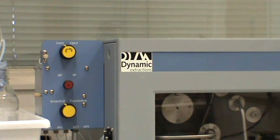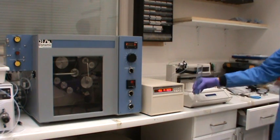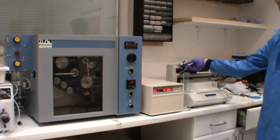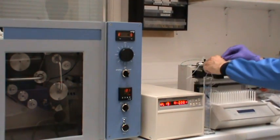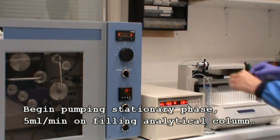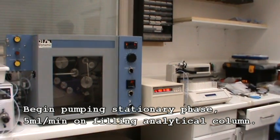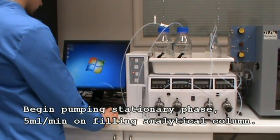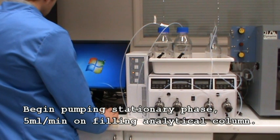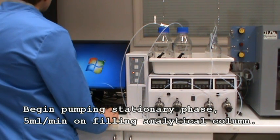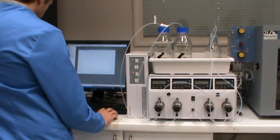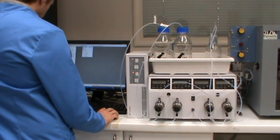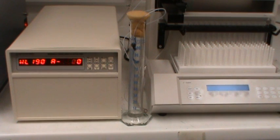Now we need to fill the column with stationary phase. Take the waste stream from the detector and place it in a measuring cylinder. Begin the program on your chromatography software and start to pump stationary phase. As the stationary phase begins to fill the column, any previous solvent in the column will be purged.